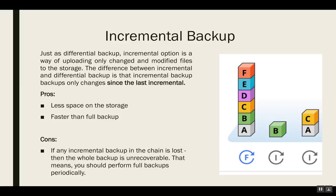For example, say you backed up A, B, C on Wednesday. C changed a bit on Thursday and you stored that. You added D on Friday, but you lost Thursday's C-change data. When you restore later, you will never have what C changed to. So it is always suggested to have at least one full backup scheduled at least once a week, so that even if you lose something on the incremental front, you at least have a full backup image to bring you back to the main data.